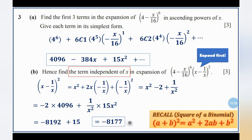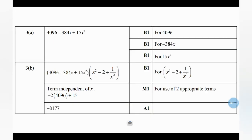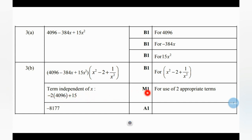Looking at the marking scheme: for Part A, each of the three terms earns 1 mark, totalling 3 marks. For Part B, expanding the binomial earns 1 mark. Finding the term independent of x — negative 2 times 4,096 plus 15 — earns another mark, and the final answer of negative 8,177 earns the last mark, totalling 3 marks for Part B and 6 marks for the whole question.